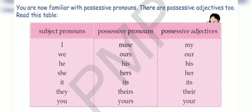You are already aware of subject pronouns and possessive pronouns. Now here are the possessive adjectives and how we use them before the nouns. It tells us about the possession of the nouns. For I — my; for we — our; for he — his; for she — her; for it — its; for they — their; and for you — your. So these are the possessive adjectives, and we generally use them before the noun.